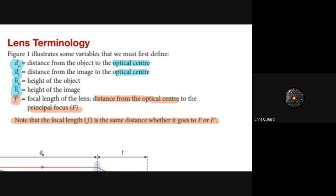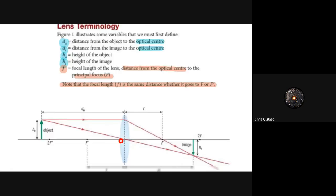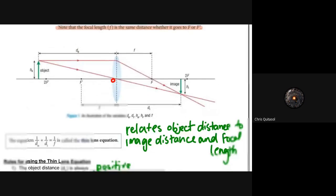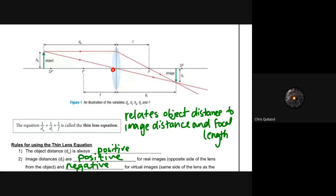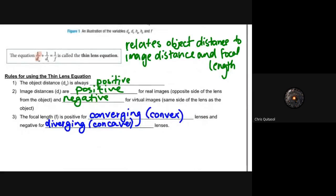We've looked at how to determine the location of an image using ray diagrams, and now we can use this equation. The thin lens equation is: 1/d₀ + 1/dᵢ = 1/f. This is the equation we will utilize to determine the distance of the object, the distance of the image, as well as other aspects that we'll come to later.